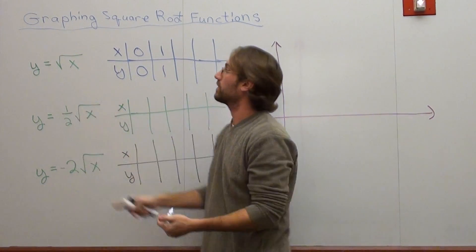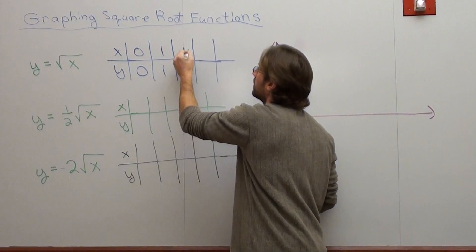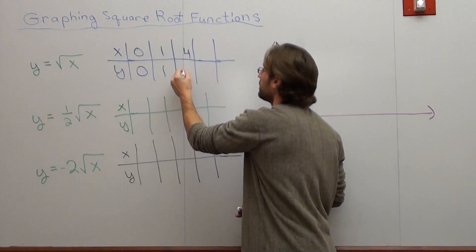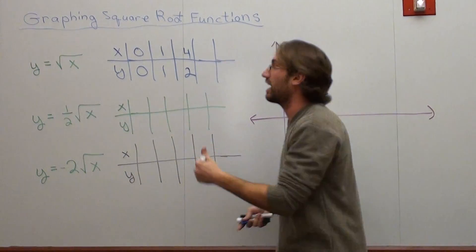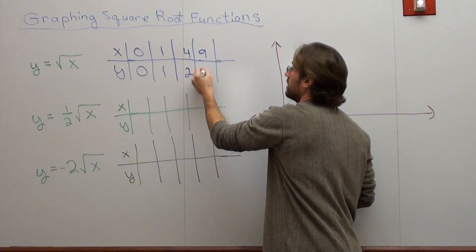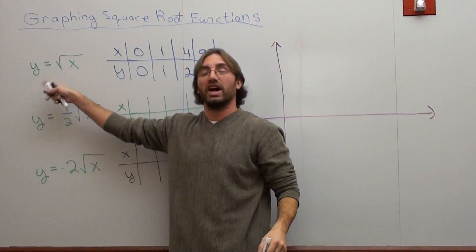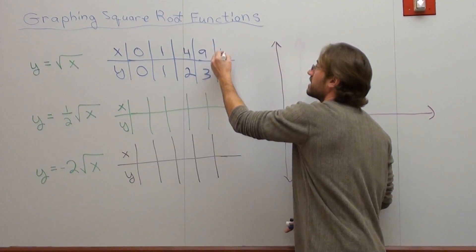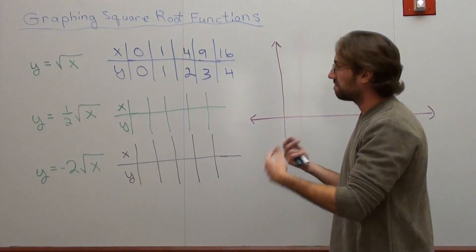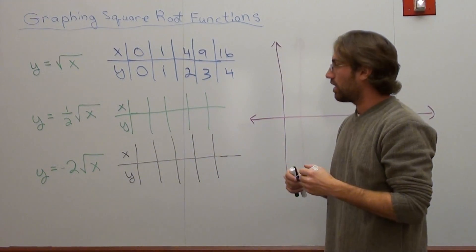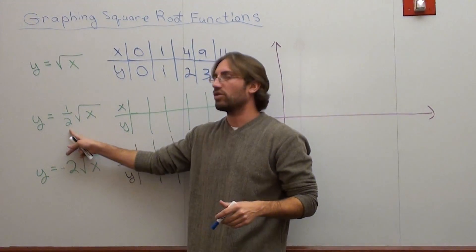The next value I want to use for this one is one because the square root of one comes out to one. Now I don't want to use two next. Well, I could, but then you have to figure out what the square root of two is in your calculator and that's kind of cumbersome. So what I would do instead is try to figure out the next perfect square after one, and that is four.